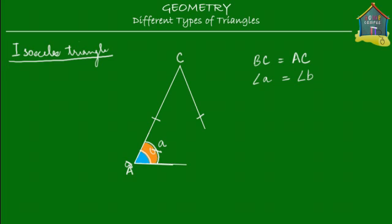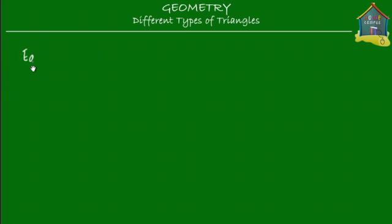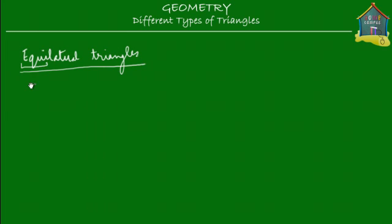Let's talk about equilateral triangles now. "Equi" means equal, and "lateral" means side. So a triangle with equal sides is an equilateral triangle — as simple as that.